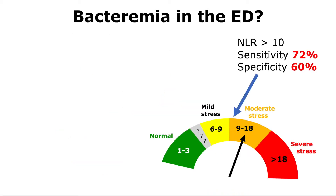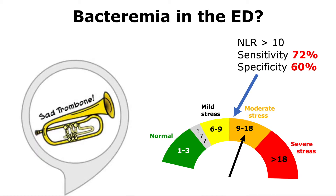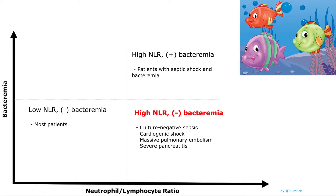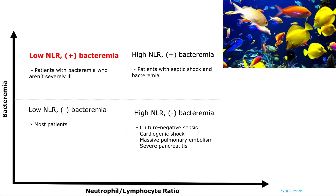Let's take another example: detection of bacteremia among patients in the emergency department. NLR doesn't perform well here. NLR should be able to sort out sick bacteremic patients from healthy patients; however, this is a heterogeneous population. Lots of sick patients have a high NLR without being bacteremic, and furthermore, some bacteremic patients aren't critically ill. Thus, in this heterogeneous population, NLR doesn't perform well.